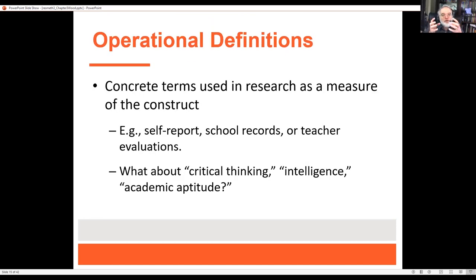Operational definitions are that transition point where we go from our construct to the particular measures that we think are examples of what that construct is — so self-report, school records, and so forth. Have any of you had experiences with operational definitions of other things? For example, academic aptitude, critical thinking, or intelligence — have you heard of any measures of these things?